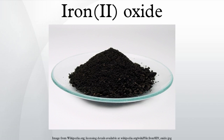Iron(II) oxide is the inorganic compound with the formula FeO. Its mineral form is known as wüstite. One of several iron oxides, it is a black-colored powder that is sometimes confused with rust, which consists of hydrated iron oxide. Iron(II) oxide also refers to a family of related non-stoichiometric compounds, which are typically iron deficient with compositions ranging from Fe0.840 to Fe0.950.